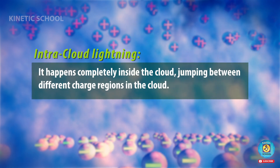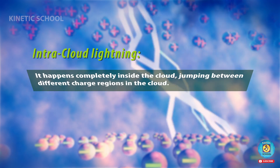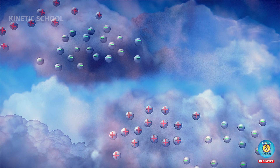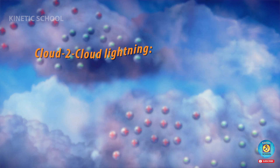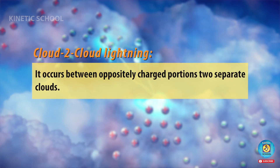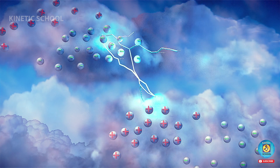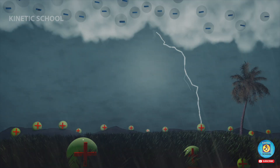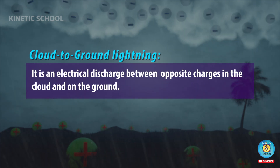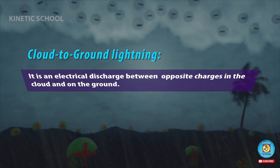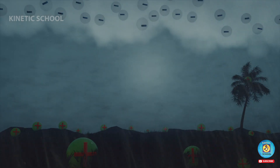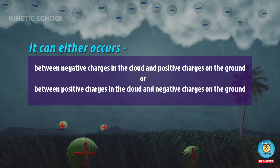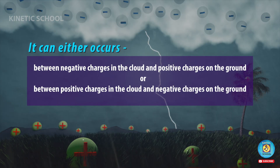Intra-cloud lightning happens completely inside the cloud, jumping between different charge regions within the cloud. Cloud-to-ground lightning involves charges in the cloud and on the ground. It can either occur between negative charges in the cloud and positive charges on the ground, or between positive charges in the cloud and negative charges on the ground.